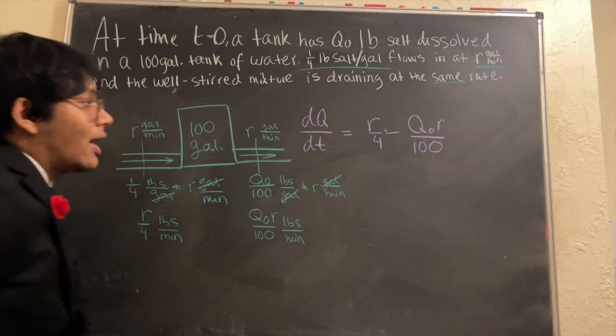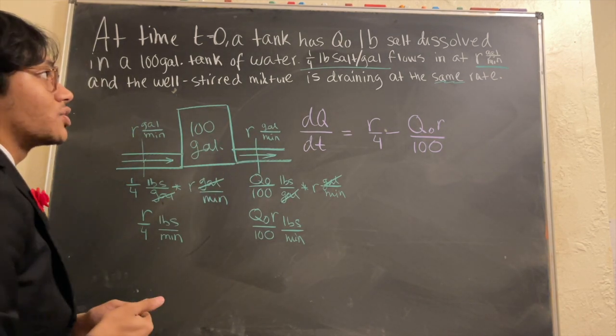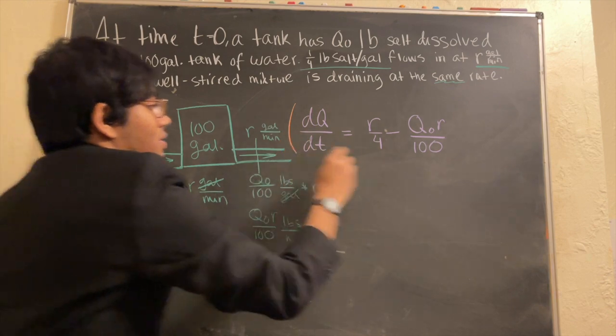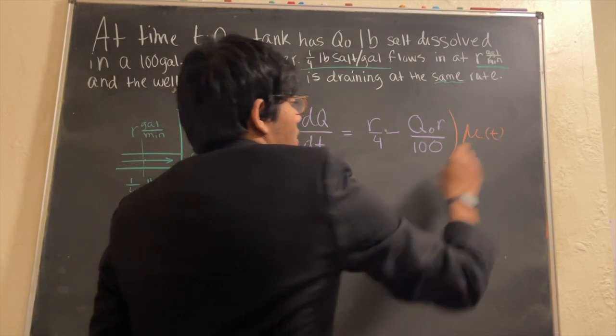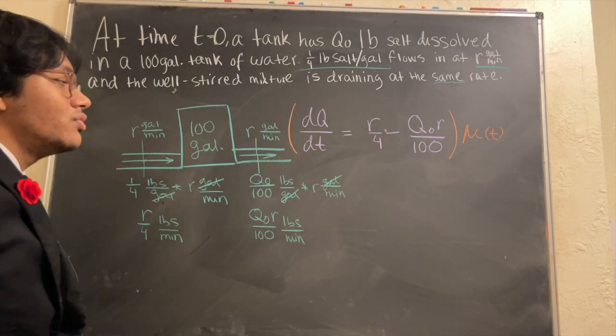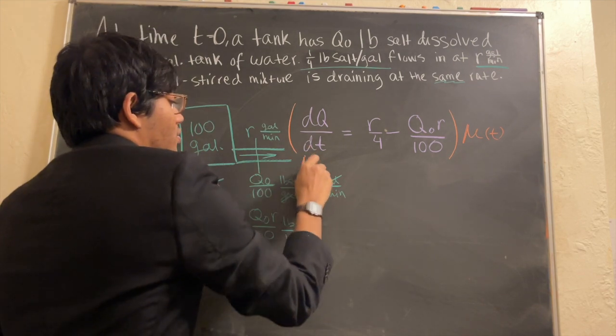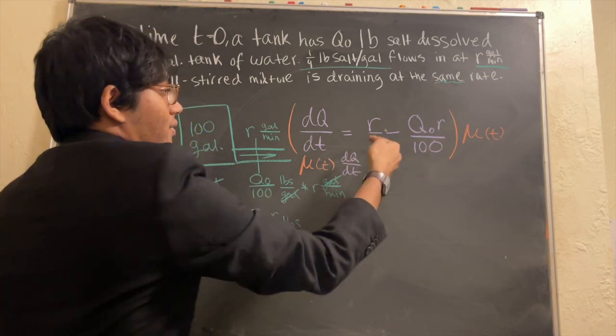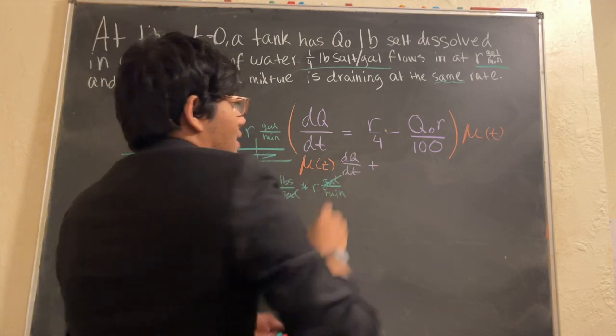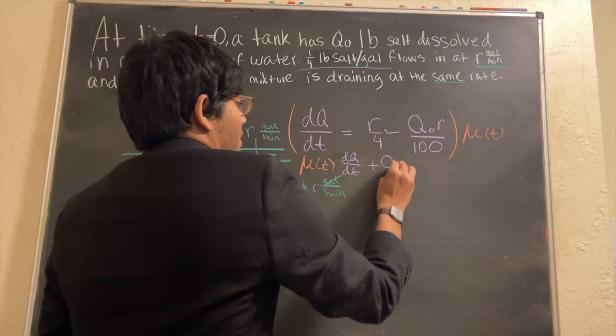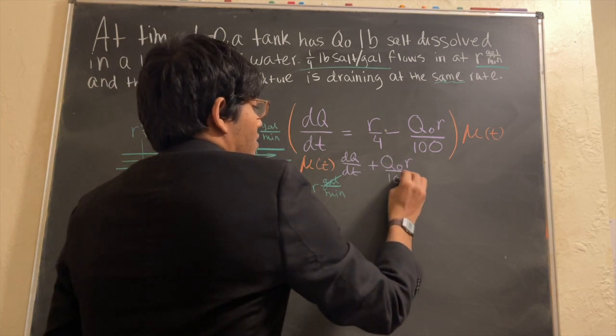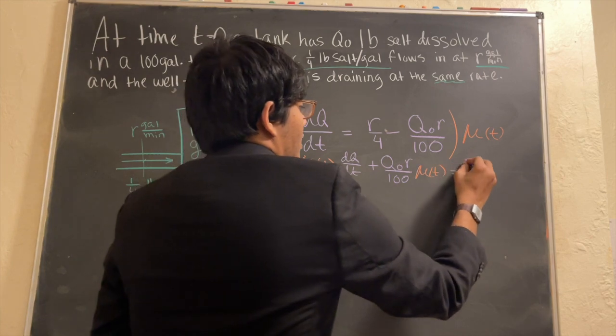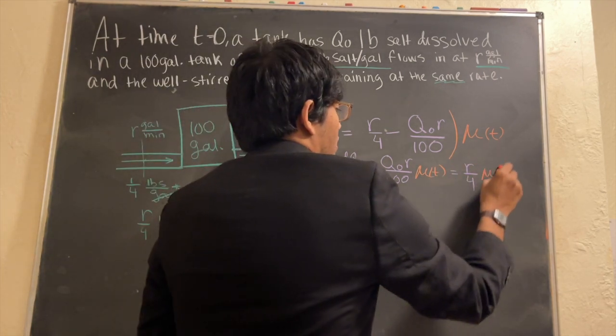All right. So how can we find what q is in this differential equation? Well, like anytime we're faced with the unknown, let's go ahead and multiply both sides by some code, some integrating factor, mu of t. And so I'm going to have mu of t dq/dt. Bringing this to the other side, I'm going to have plus mu of t times q naught r over 100, is equal to none other than r over 4 times mu of t.